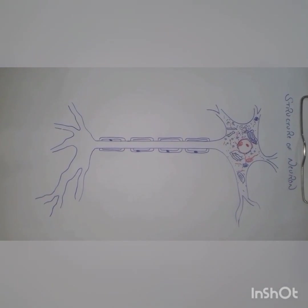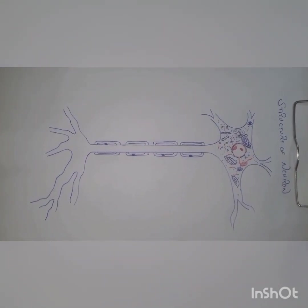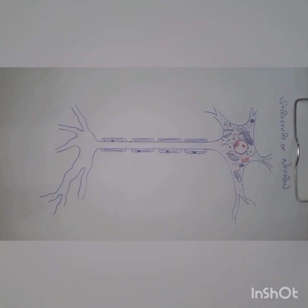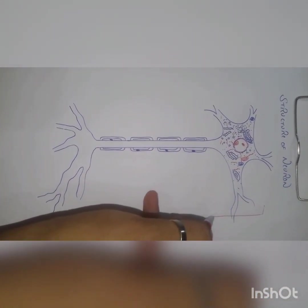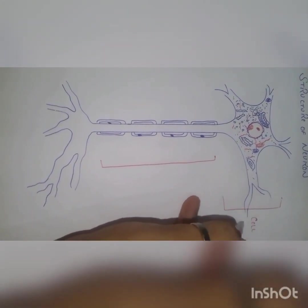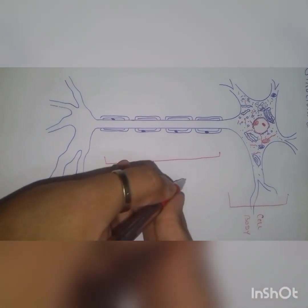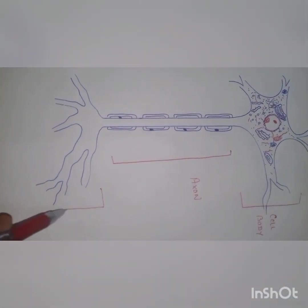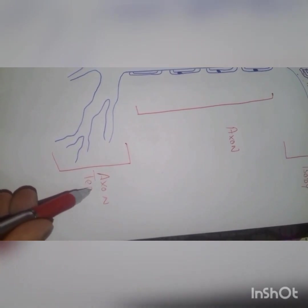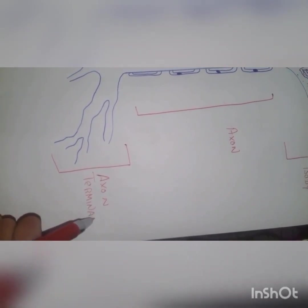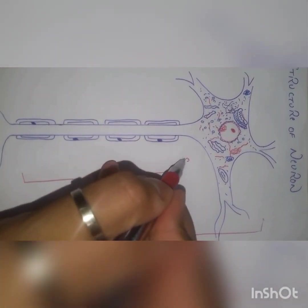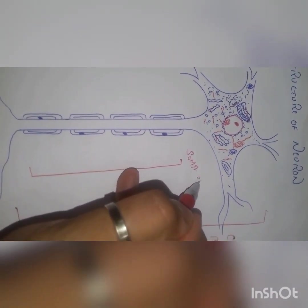In this video we will be studying about the structure of the neuron — which parts the neuron consists of. Before studying the structure of the neuron, we must know that the neuron consists of three main parts: the cell body, the axon, and the axon terminal. The cell body is also called the soma or the perikaryon.